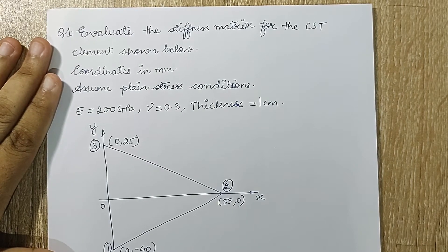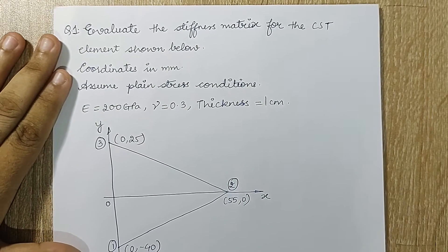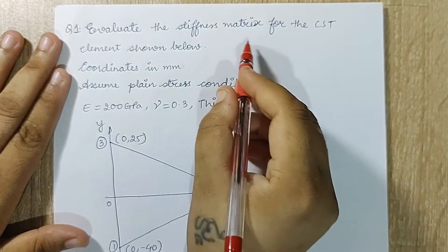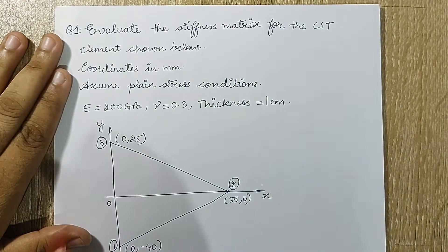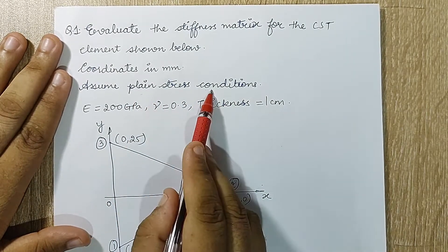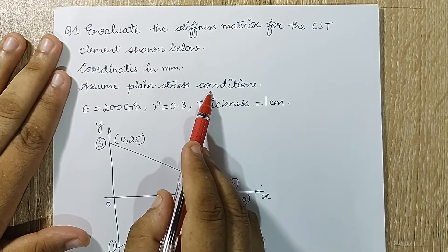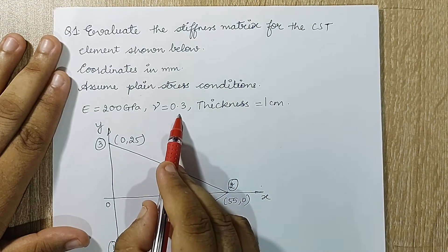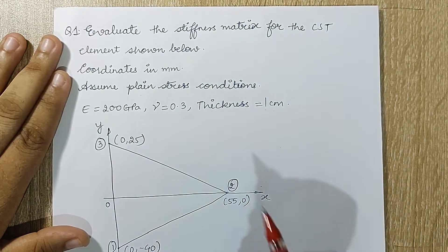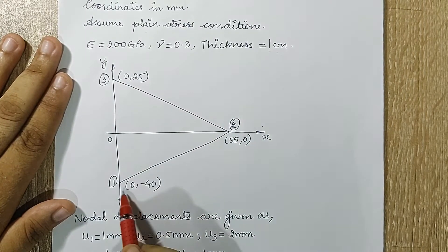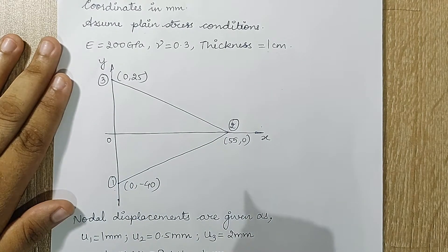Hello everyone, welcome to the next session of finite element analysis. In this session I am taking up a numerical on stress analysis for CST element — evaluate the stiffness matrix for the CST element shown below. Coordinates are given in mm. Assume plane stress condition. This is given because we have used the equation of plane stress for calculating the stress. E is given, nu is given as 0.3, and the thickness is given as 1 centimeter. This is a triangular element; nodes 1, 2, and 3 have coordinates given.